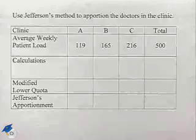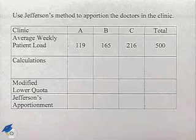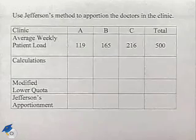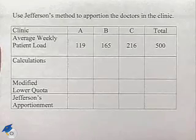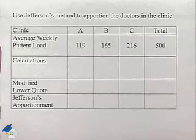Now in our next problem, we're going to use Jefferson's method. Use Jefferson's method to apportion the doctors in the clinic. We have three different clinics labeled A, B, and C, and their populations given below.